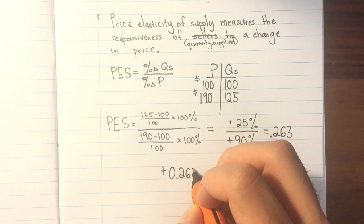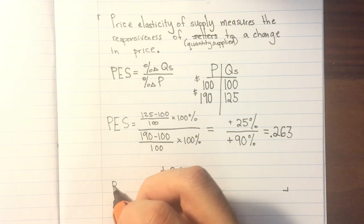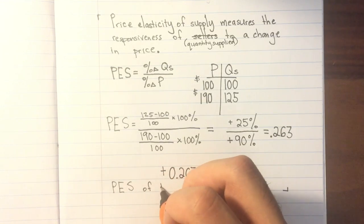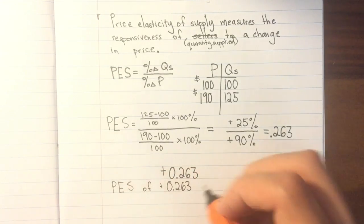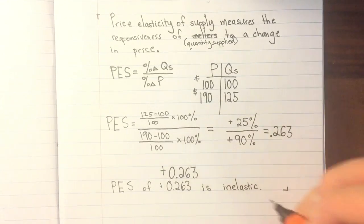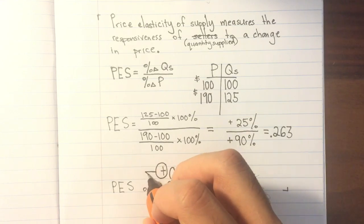The second thing we're going to look at is the size of the value. If it's between 0 and 1, it's inelastic. If it's greater than 1, it is elastic. If it's elastic, it means quantity supplied is very responsive to a change in price. If it's inelastic, it means that quantity supplied is not very responsive to a change in price.